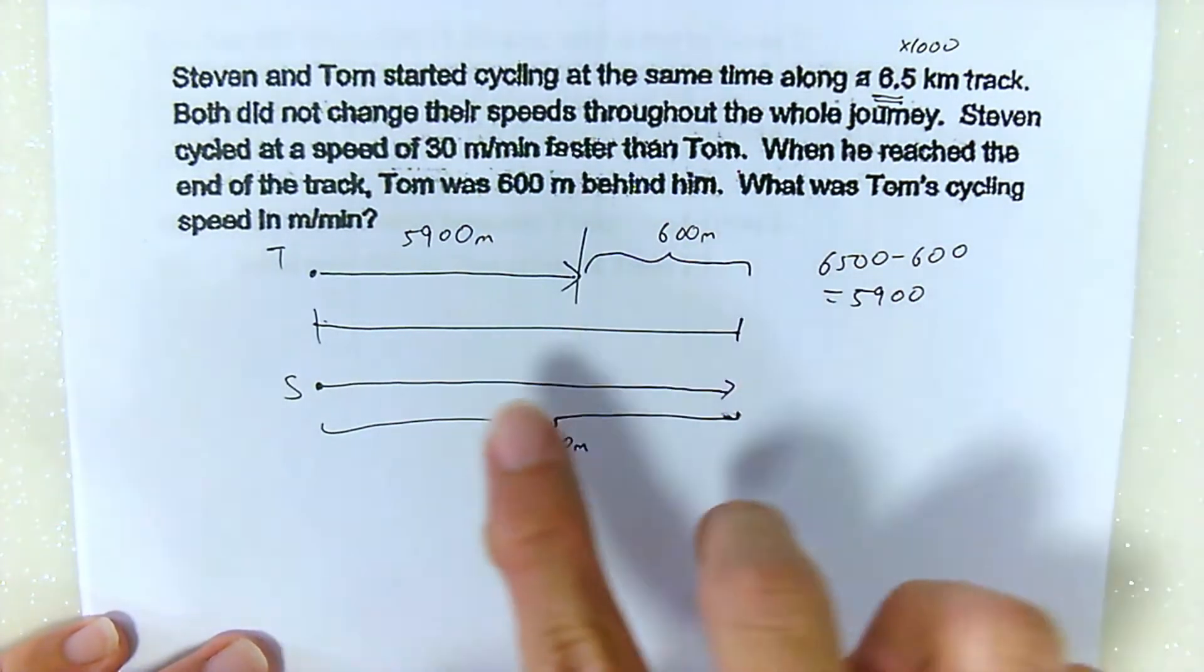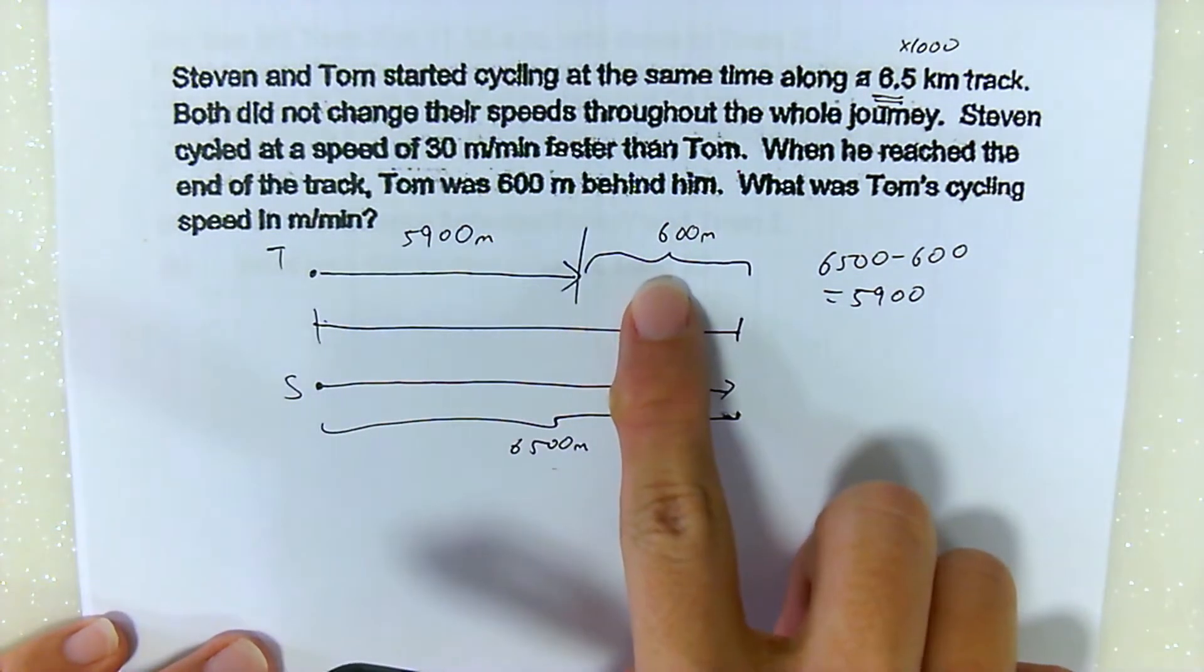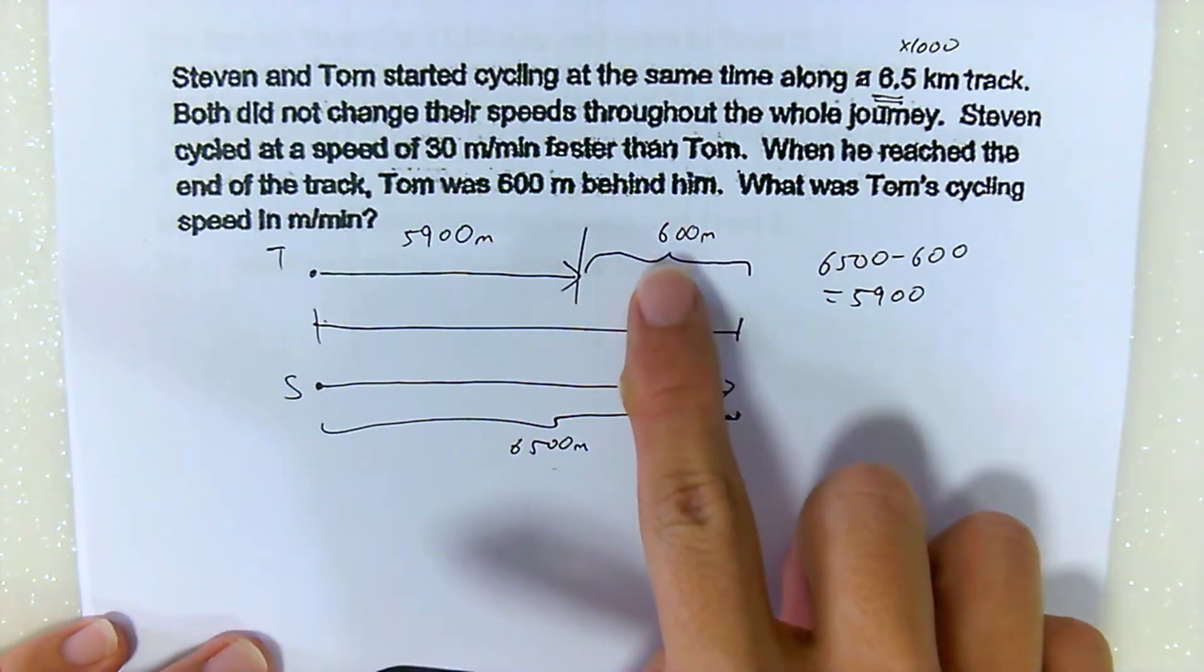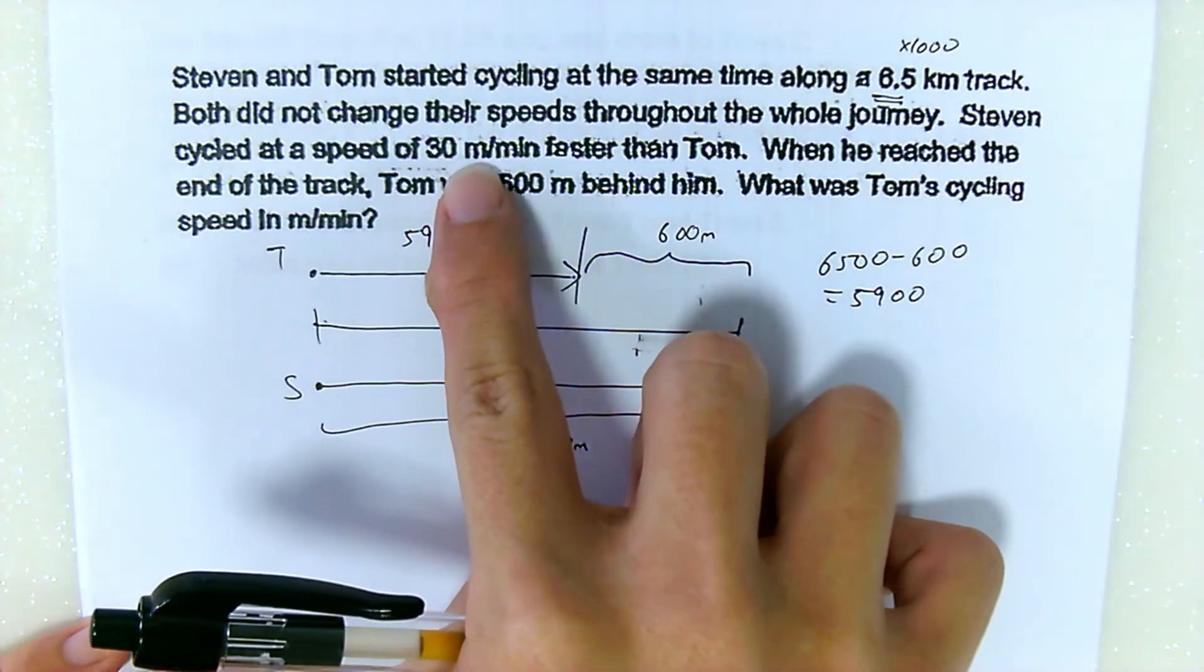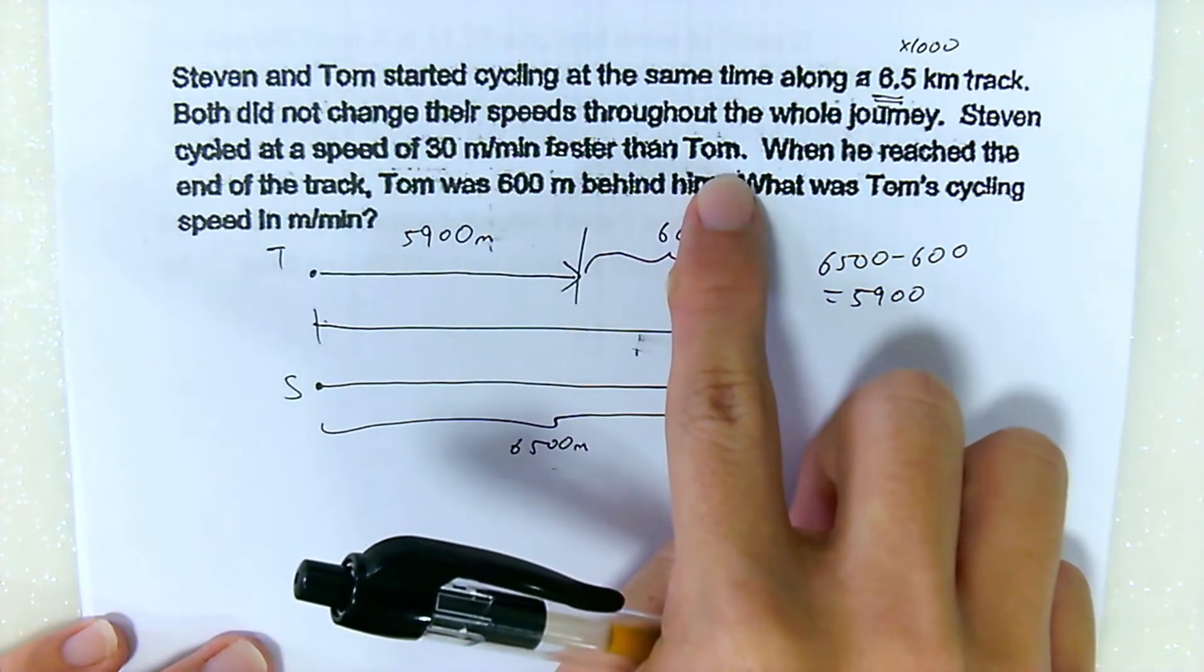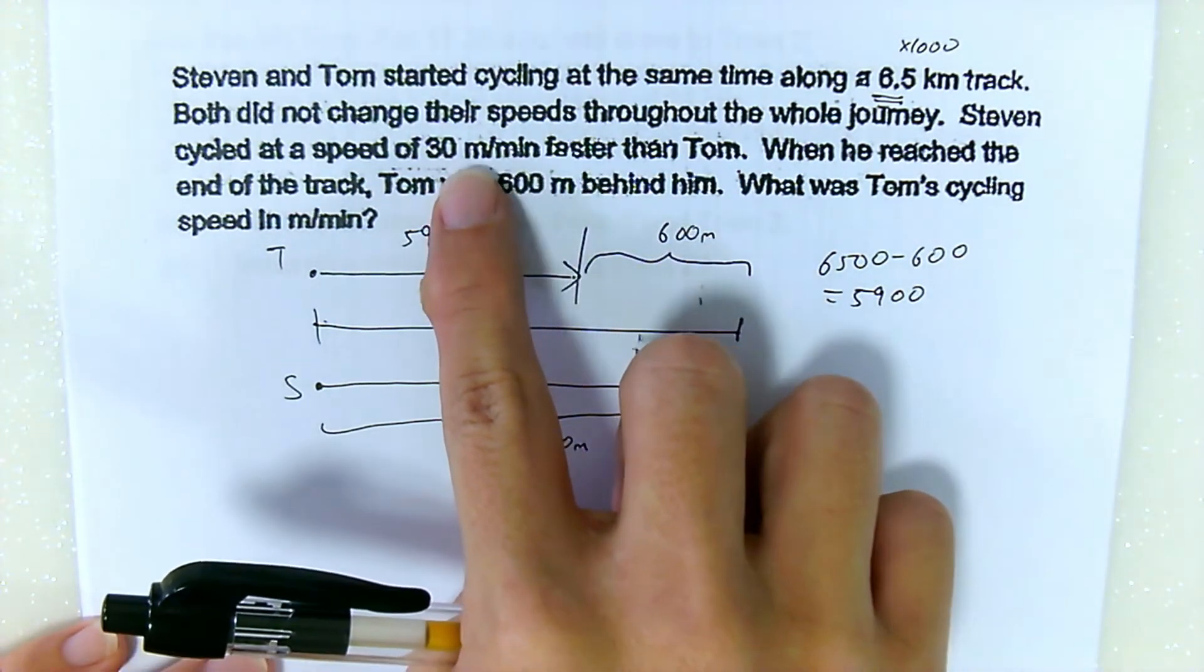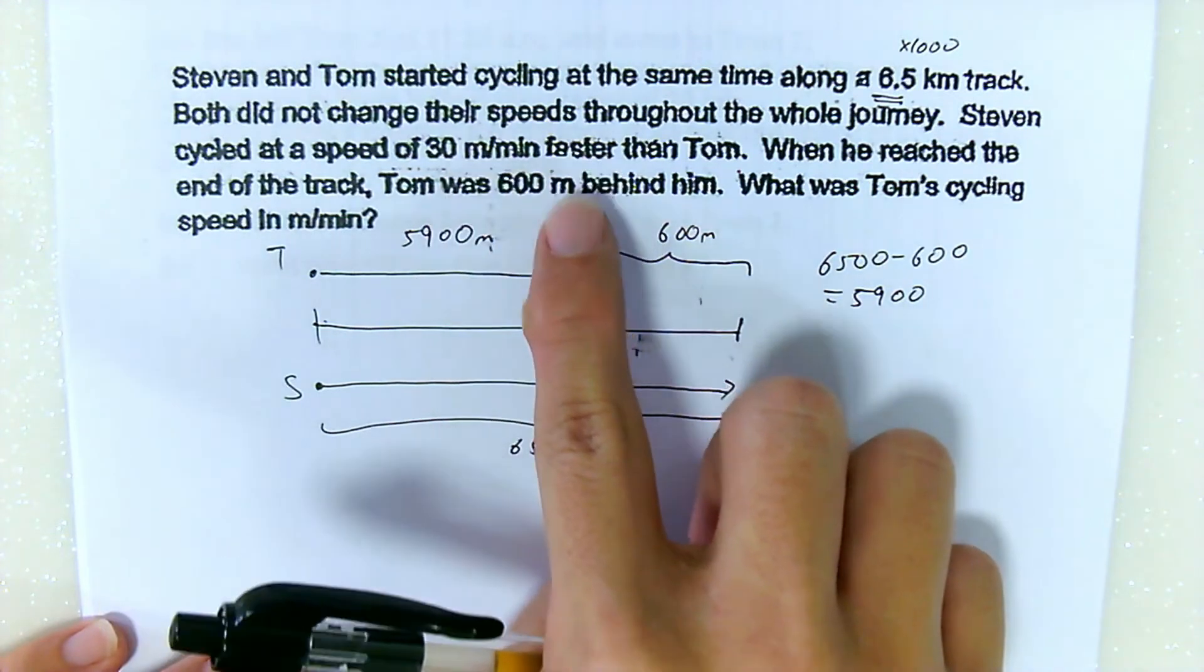But we know that for Steven to be 600 meters ahead, how long did he need to travel 600 meters ahead of Tom? We know that his speed is 30 meters per minute faster than Tom. Every single minute, he will travel 30 meters more than Tom.